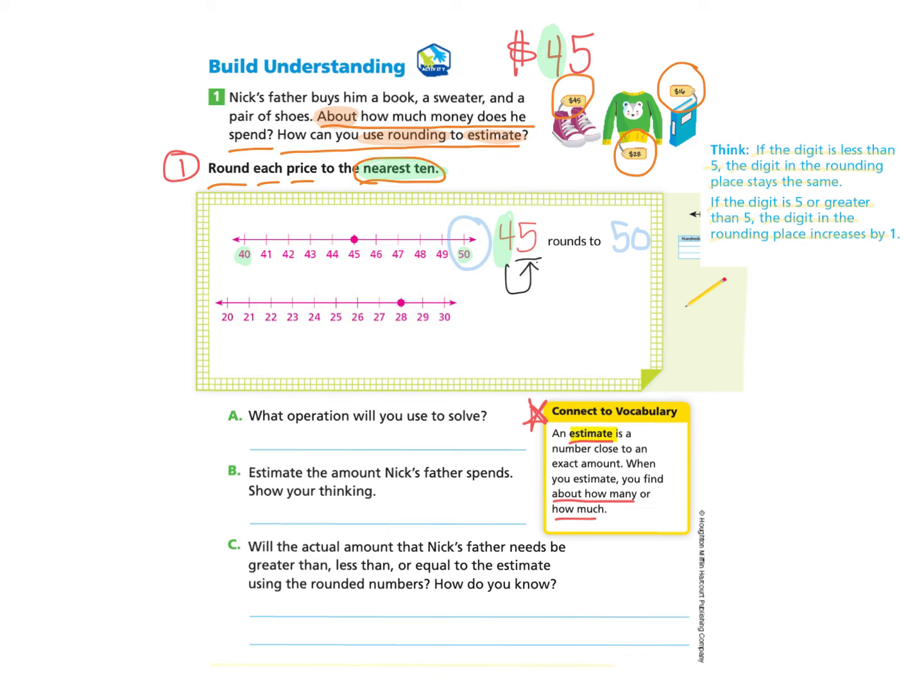Now I will look at the sweater, which is $28. I notice that the tens column is at 2, and so I'm going to make my number line from 20 to 30. I place the 28 on the number line. Now it definitely looks closer to the 30.